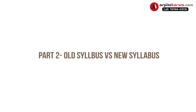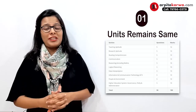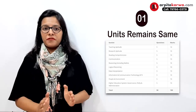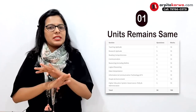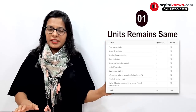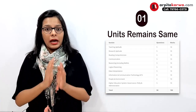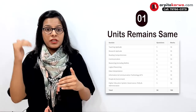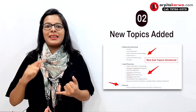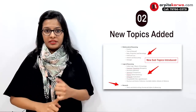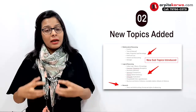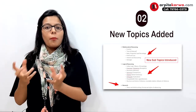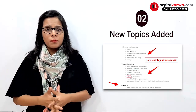Now let's look at how the new syllabus differs from the old one and why students are worried. If you look at the new syllabus, there are 10 units — the same 10 units that existed in the old syllabus. So overall, nothing has fundamentally changed. However, looking at the subtopics under each unit, some topics have been added — particularly in units like research, logical reasoning, and mathematical reasoning — while units like teaching aptitude and reading comprehension have remained the same.